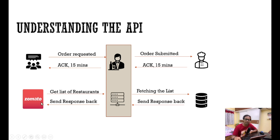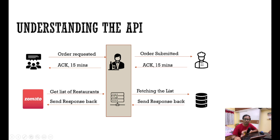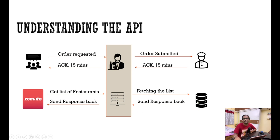What Zomato is doing here is taking a request — asking the server to give the list of restaurants — and sending it back. That server and the logic we write and deploy in it is called an API. API always sits in between two different applications — in this case a Zomato application and a database — and helps to serve a request.